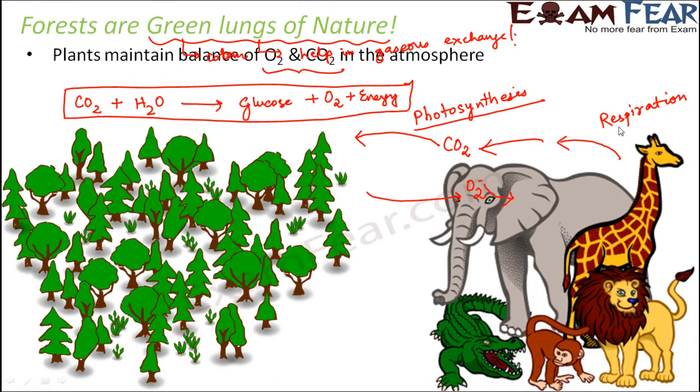While inhaling, when we breathe in, we take in oxygen which was released by the plants. When we breathe out, we release carbon dioxide which is taken up by the plants. If there are a lesser number of plants, there will be less oxygen available in the atmosphere, so animals will have difficulty in breathing.